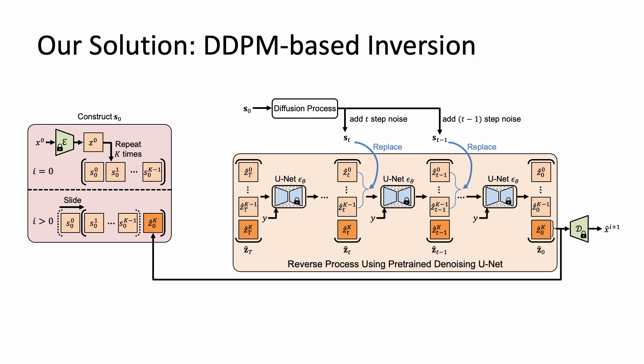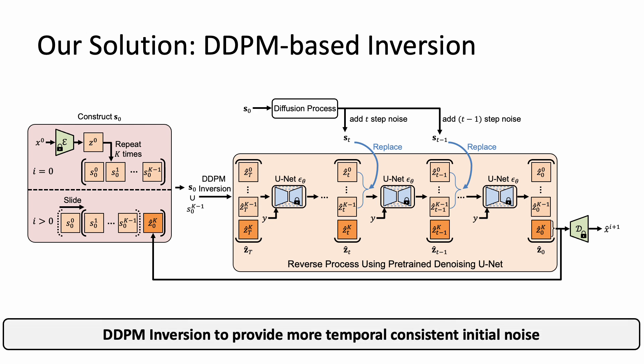To provide the initial noise that can produce more temporally consistent results, we introduce the inversion strategy based on the DDPM forward process. That is, we add T forward steps of Gaussian noise to S0 to obtain st.